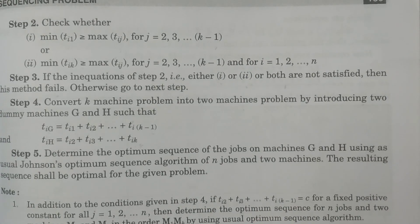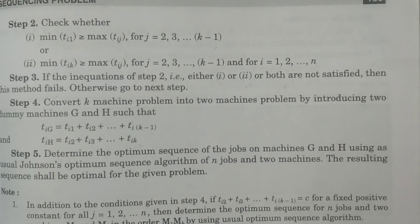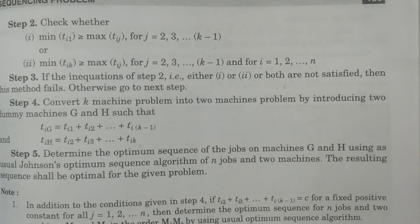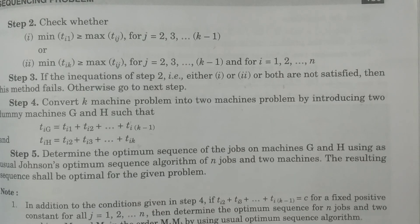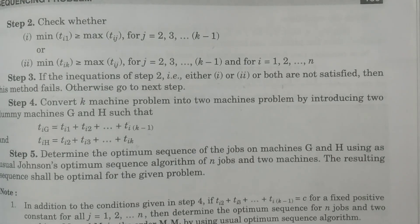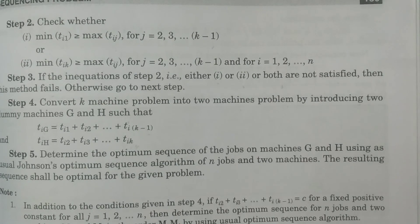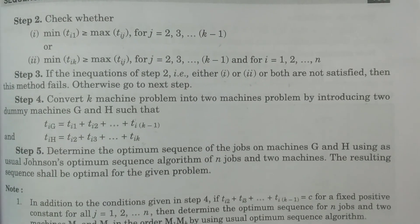So the procedure for n jobs through k missions is: convert the given k-mission problem into an n-jobs and two-mission problem using the described procedure, obtain the optimum sequence using Johnson's algorithm, then calculate time in, time out, and total elapsed time for all k missions. Thank you.